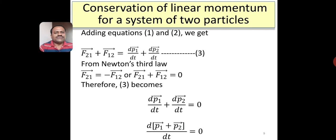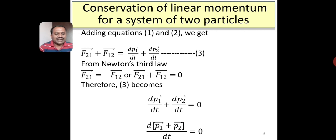Adding equations 1 and 2, we get f21 plus f12 is equal to dp1 by dt plus dp2 by dt, where the addition is vector addition. From Newton's third law, since there are no external forces, A exerts a force on B and B exerts a force on A. These internal forces must follow Newton's third law; that is, f21 is equal to minus f12, where the negative sign indicates that the forces are oppositely directed. Therefore, f21 plus f12 is equal to 0.